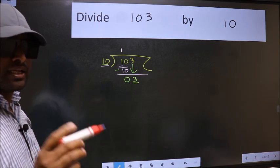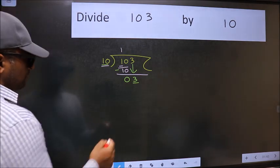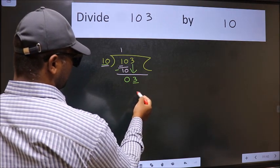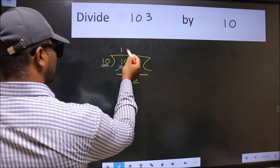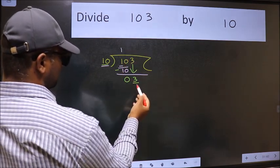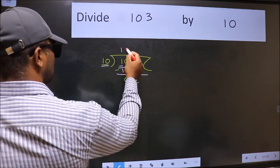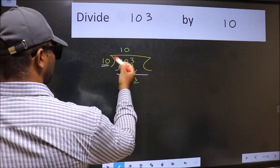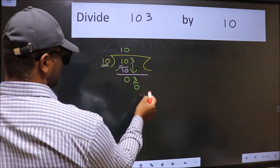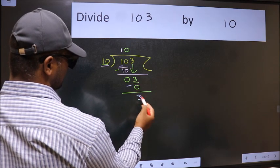Instead of that, what you should think of doing is, which number should we take here? If I take 1, we will get 10. But 10 is larger than 3. So what we should do is, we should take 0. So 10 into 0. Now we should subtract. We get 3.